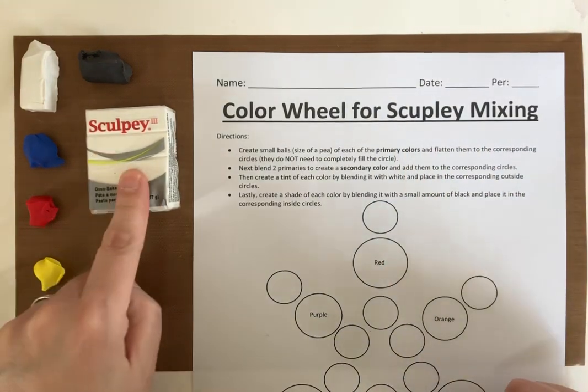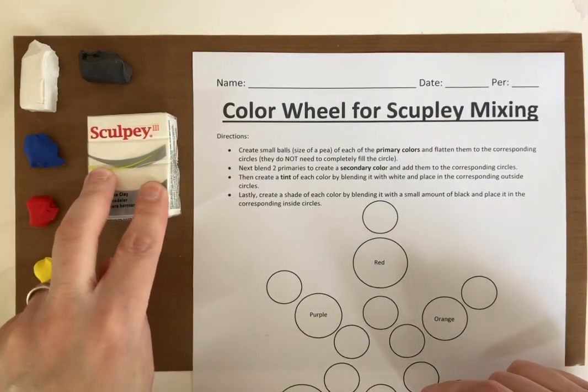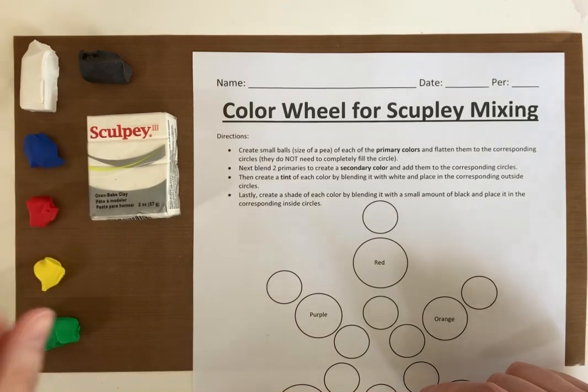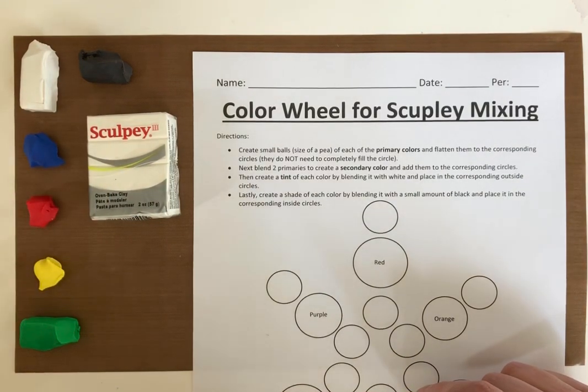So you're gonna be getting two white packages of Sculpey, two black packages, a blue, a red, a yellow, and a green package.